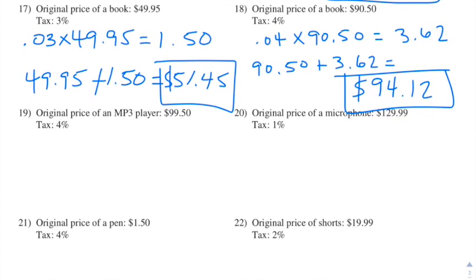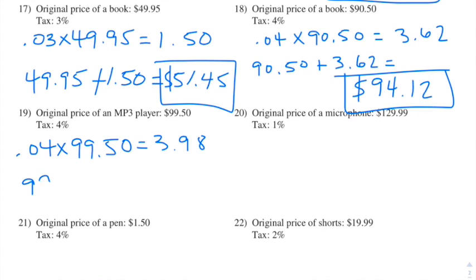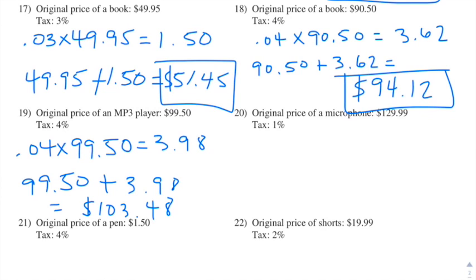Number nineteen: the original price of an MP3 player is $99.50 and the tax is 4%. So we do 0.04 times 99.50 and we end up getting $3.98. We take $99.50 plus $3.98 and we get $103.48.